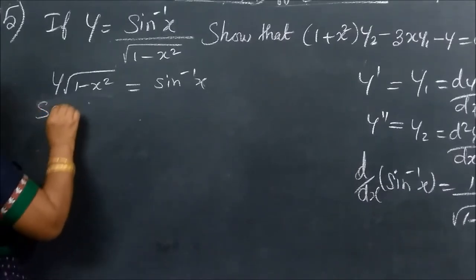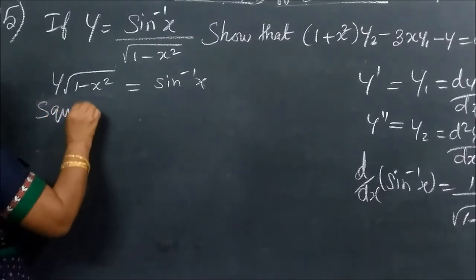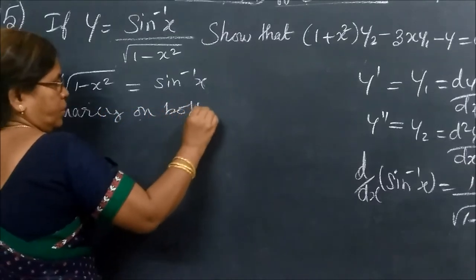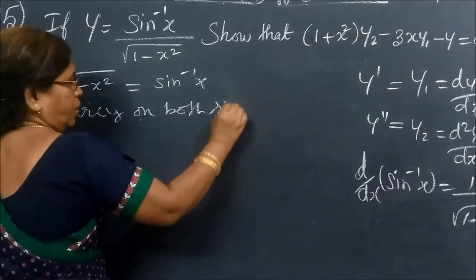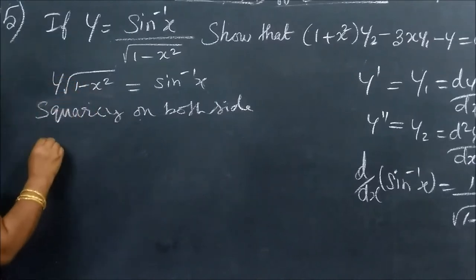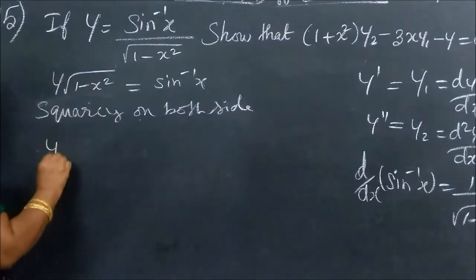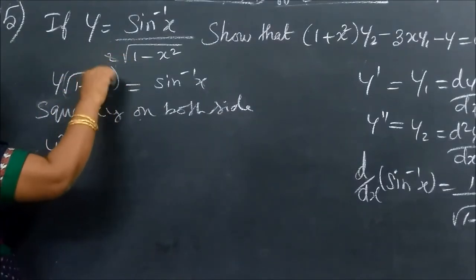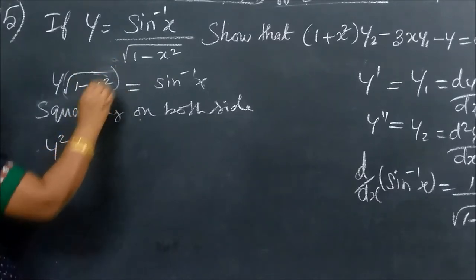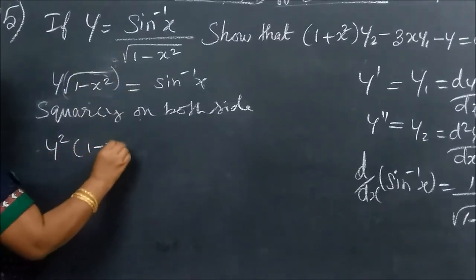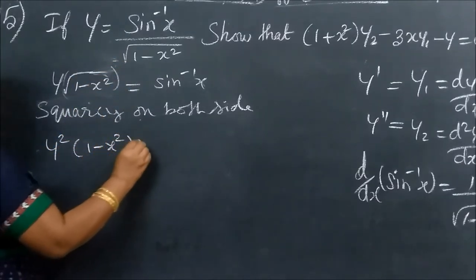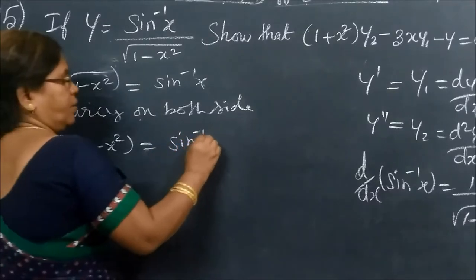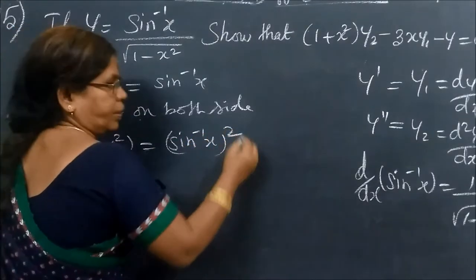Just put it on both sides. Taking this part, we square both sides. Root to square will cancel. So we get 1 minus Y square. Now sin inverse X whole square.